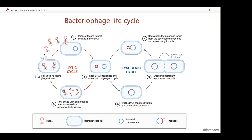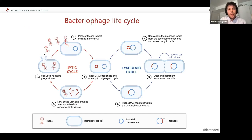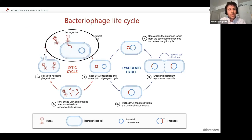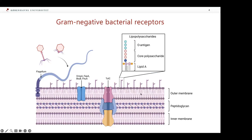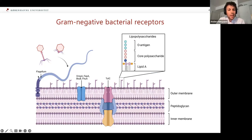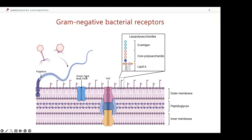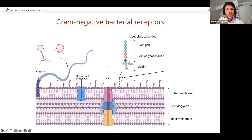I don't want to go too much into the bacterial life cycles; I'll just stress that during my thesis I've been working on the first step — the recognition of bacteria. If we zoom in on the gram-negative bacterial membrane, which consists of an inner membrane, a peptidoglycan layer, and an outer membrane, within this outer membrane we have different protein complexes that can serve as phage receptors — such as the flagellum, outer membrane proteins like OmpA and FepA, or even TolC. But also, phages can recognize polysaccharides.